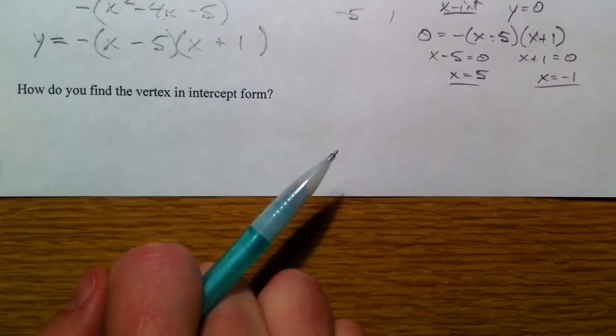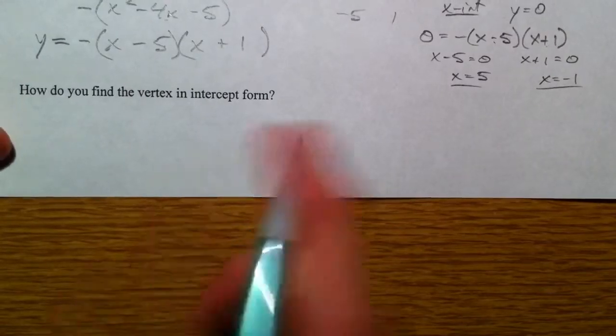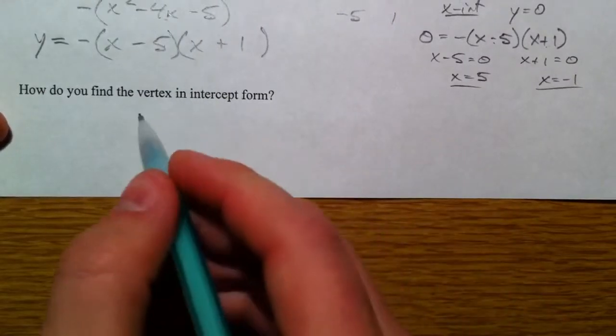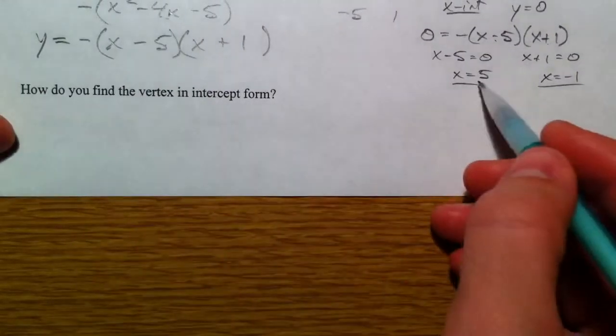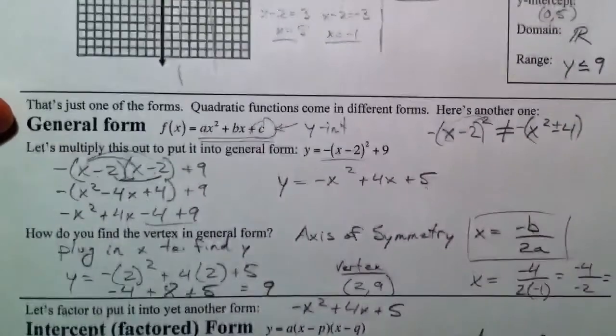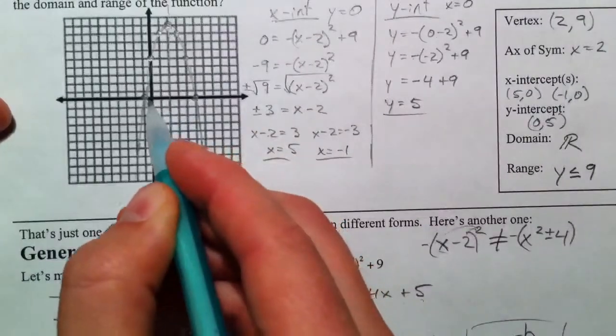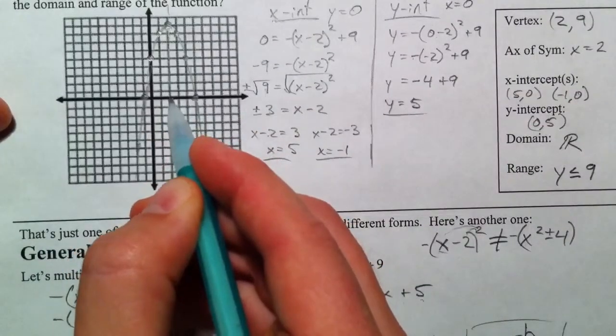So how do you find the vertex? Because again, vertex is one of the most important parts to be able to find in this. If 5 and negative 1 are your x-intercepts because those are the easiest to find, you know that your axis of symmetry has to be right in the middle of those two.